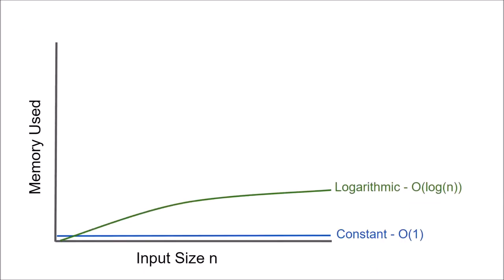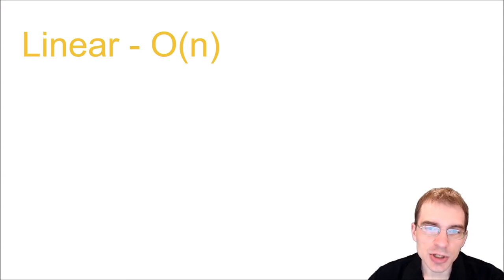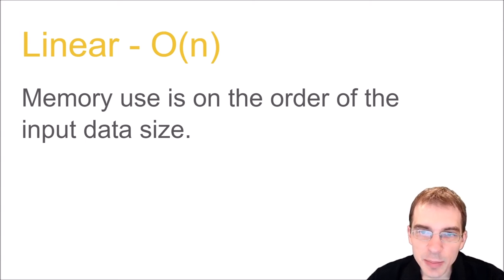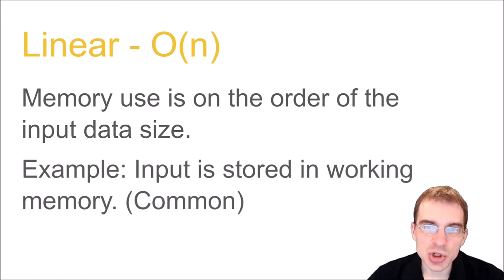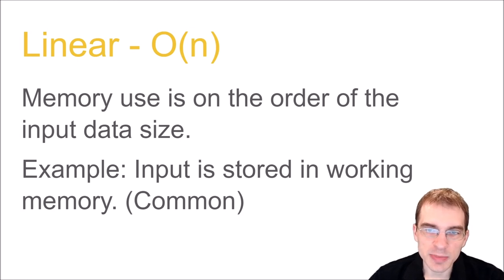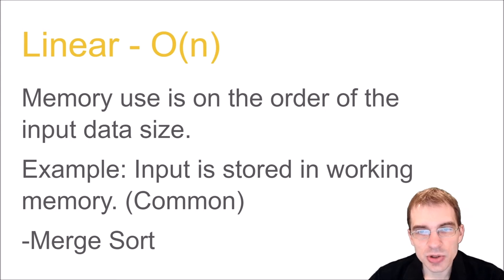The next best after logarithmic memory complexity is linear space complexity. A function with linear space complexity, also known as O(n), is one where memory use is on the order of the input data size itself. We saw an example of this earlier where we took an input string and returned all the words in that string. Examples include any function where the input is stored in some variable in working memory — any time you need to store intermediate results or something for every member of the input, you'll end up with something on the order of n in memory complexity. A specific example is merge sort — it's fast like quicksort, but requires a bit more memory.